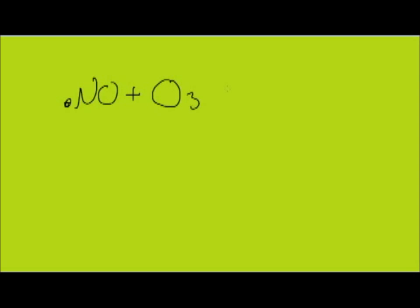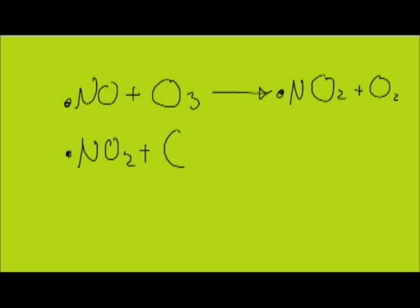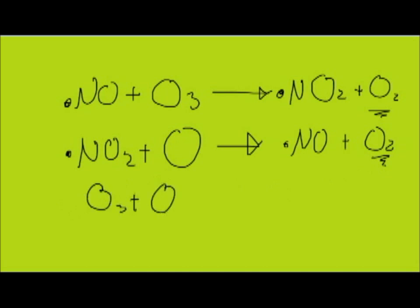The nitrogen oxide radical reacts with O3 to produce a nitrogen dioxide radical and O2. The nitrogen dioxide radical then reacts with an atom of oxygen, forming the NO radical and O2. Therefore the overall equation is again O3 plus O forms 2O2.